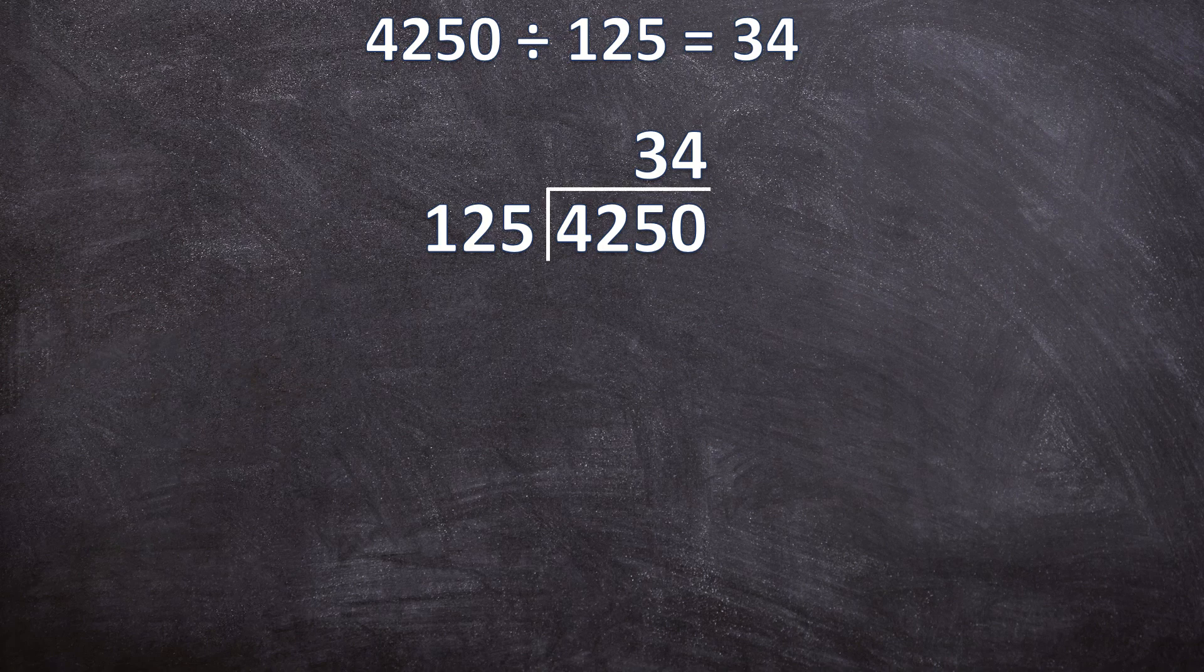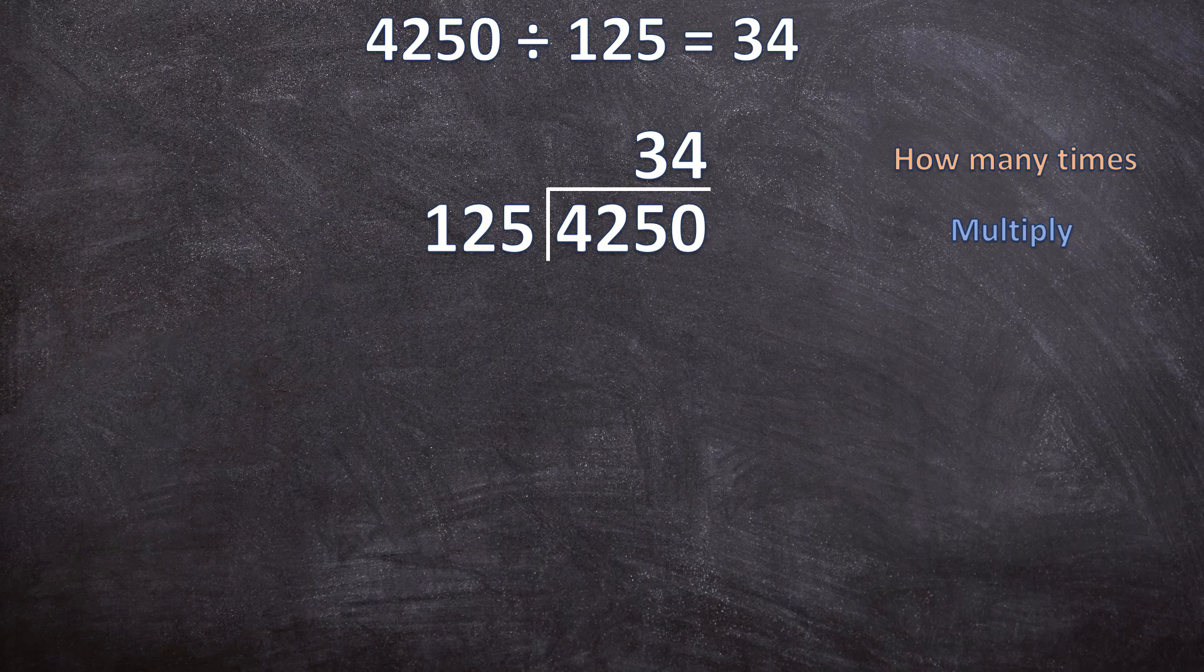And then when we are doing long division, there are four steps you're going to follow over and over again until you have the solution, until you have the quotient. The first step is how many times, the second step is multiply, the third step is subtract, and the fourth step is bring down. And remember, when you are doing long division, you always start at the left and you work your way to the right.